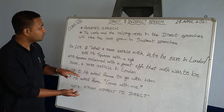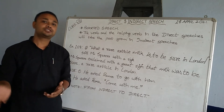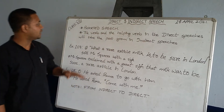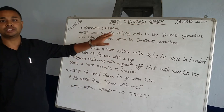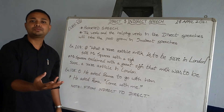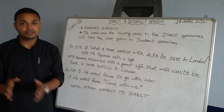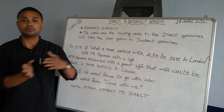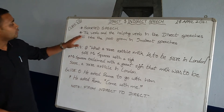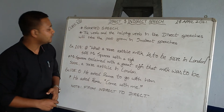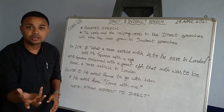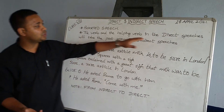Before we do that, let's do some recapitulation. Direct and indirect speech — last time in class I told you it is reported speech. A thing that is reported will always be in the past form, because something has already happened and we are reporting it. So the verb and the helping verb in the direct speech will take the past form in the indirect speech.